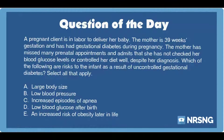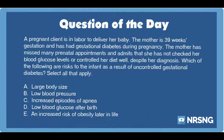A pregnant client is in labor to deliver her baby. The mother is 39 weeks gestation and has had gestational diabetes during pregnancy. The mother has missed many prenatal appointments and admits that she has not checked her blood glucose levels or controlled her diet well, despite her diagnosis. Which of the following are risks to the infant as a result of uncontrolled gestational diabetes? Select all that apply.